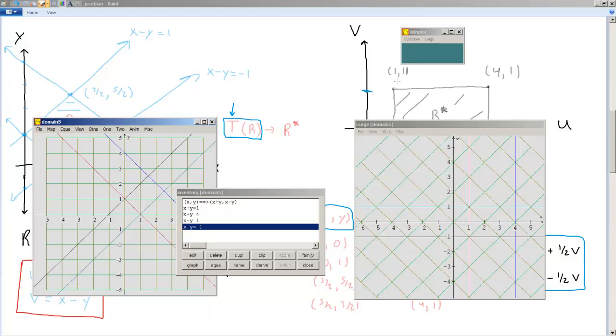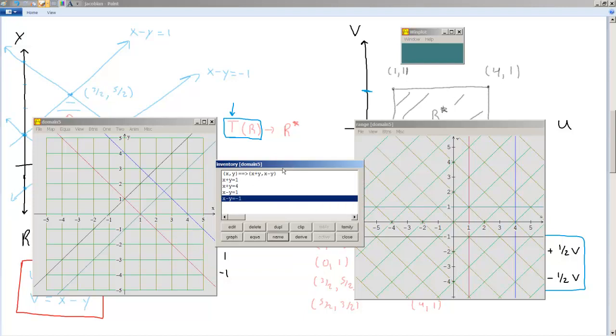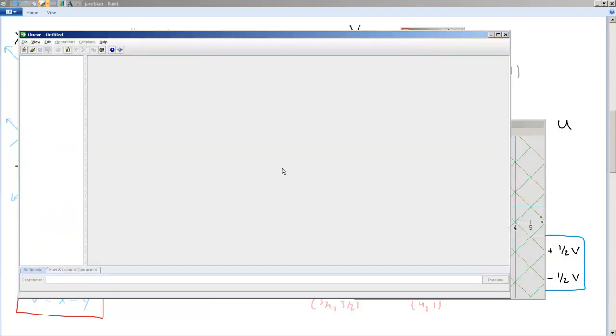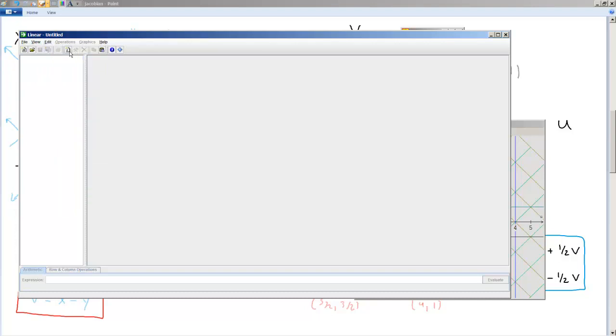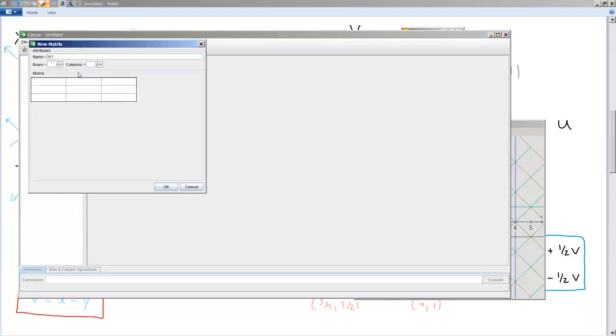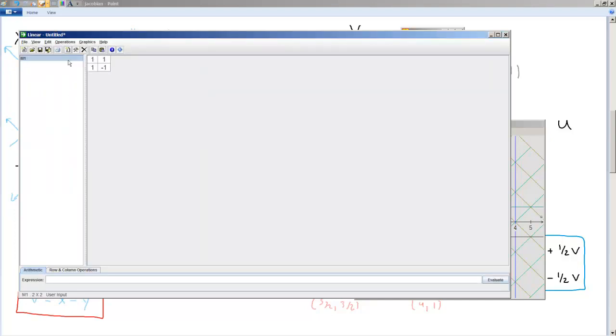Now, in general, a linear transformation is even a bit more than this. This is a specific example of a linear transformation. So if I pull up this program called Linear, which is a free download for all operating systems, I'll go to Edit New Matrix, or just press the New Matrix button. Remembering that the matrix is 2 by 2, and it was defined by 1, 1, 1, negative 1. That's the matrix of the transformation. I can go to Operations, Invert, and you'll see that I'll get exactly what we got before.